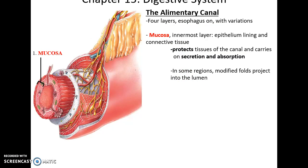Most of the alimentary canal is a muscular tube with four primary layers. The innermost layer is the mucosa — an epithelium lining layer made up of epithelial tissue followed by some connective tissue. It helps to protect deeper tissues, as well as provide secretion and absorption of various materials.